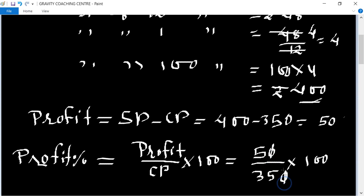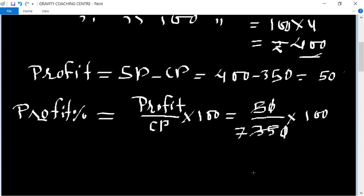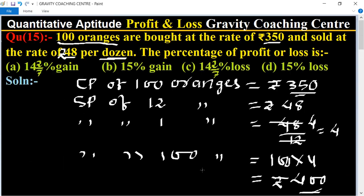Zeros cancel, 5 into 7 is 35, equals 100 upon 7, which equals 14 and 2/7 percent profit. So option A is the correct answer.